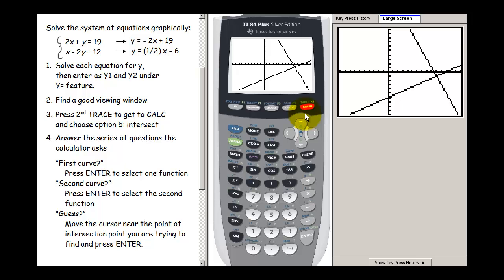Once again, sometimes it takes a little bit of experimentation with the window to get what you want to see. So now I can clearly see my two lines and I know they only intersect at this one spot right here. So we have our good viewing window.